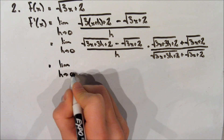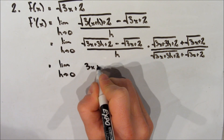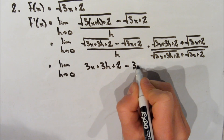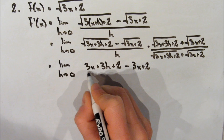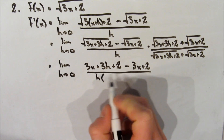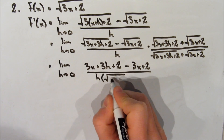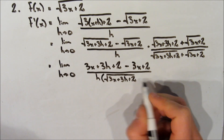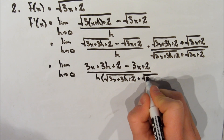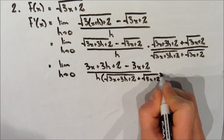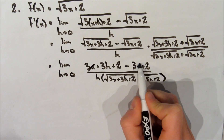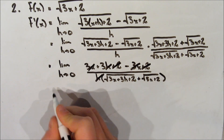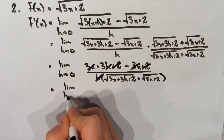We expand by multiplying: the limit as h approaches 0 of 3x plus 3h plus 2 — the middle terms cancel — minus 3x plus 2, all over h multiplied by the square root of 3x plus 3h plus 2 plus the square root of 3x plus 2. On top, we cancel the 3x's and the 2's, and also cancel the h's top and bottom.